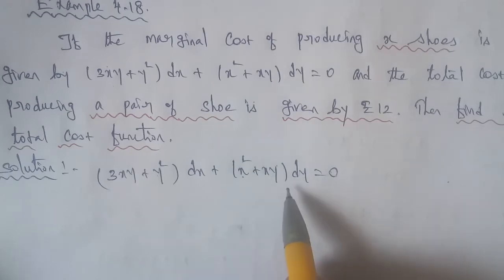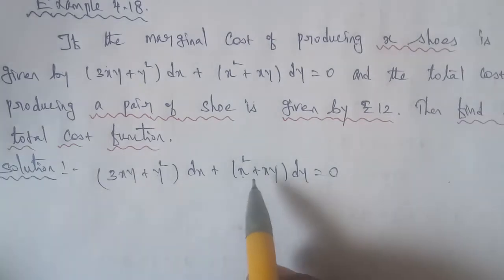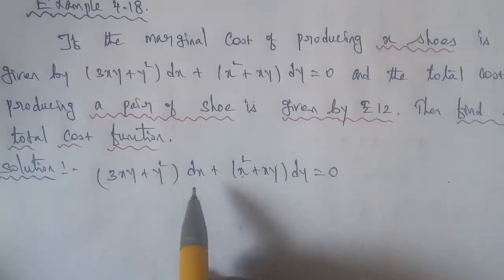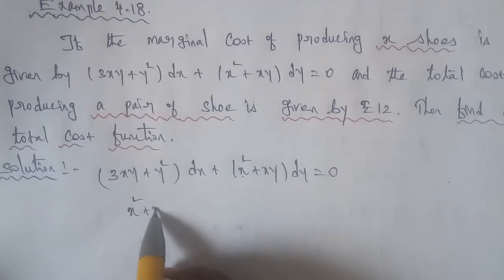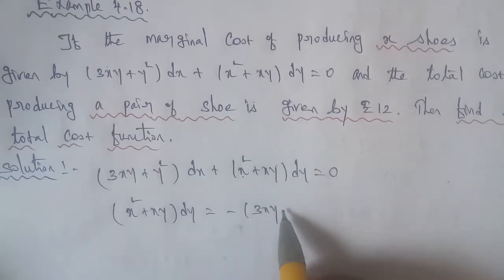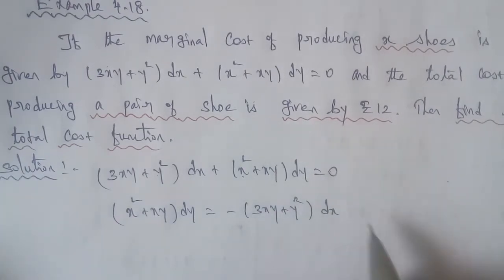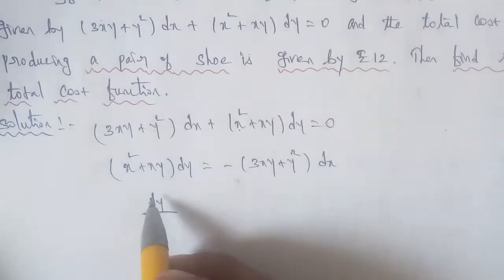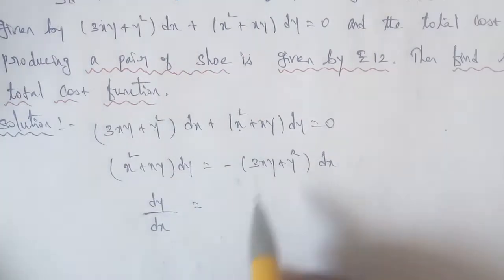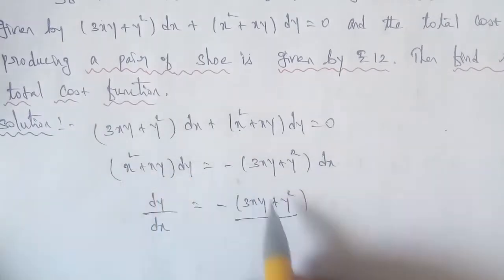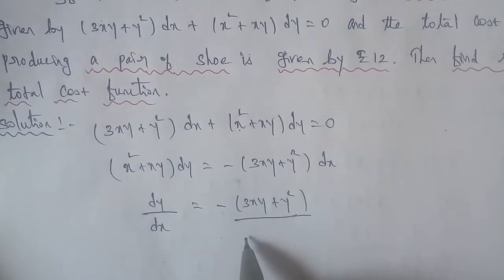Now let's convert to dy/dx form. Rearranging: (x² + xy)dy = −(3xy + y²)dx, so dy/dx = −(3xy + y²) / (x² + xy).